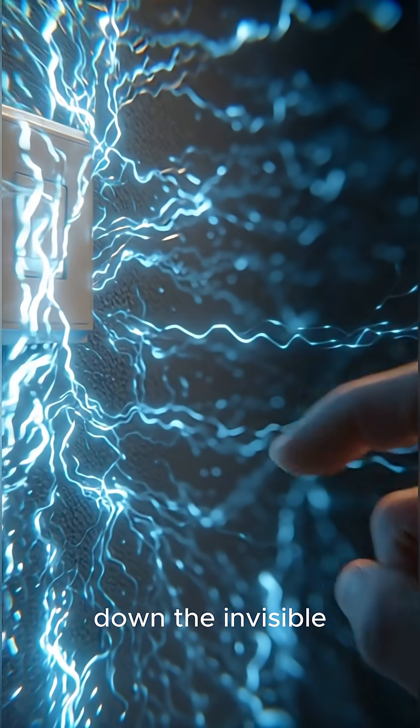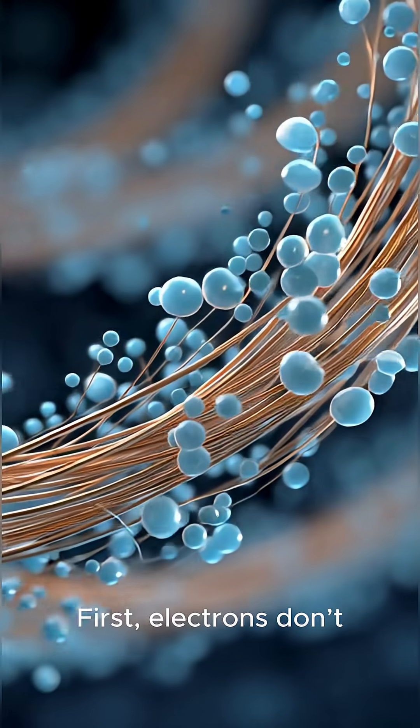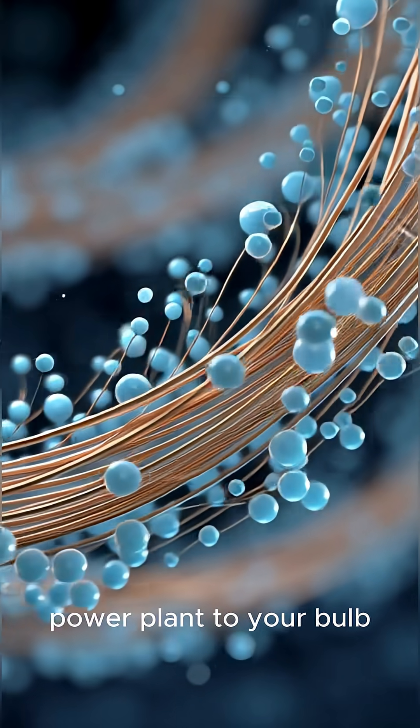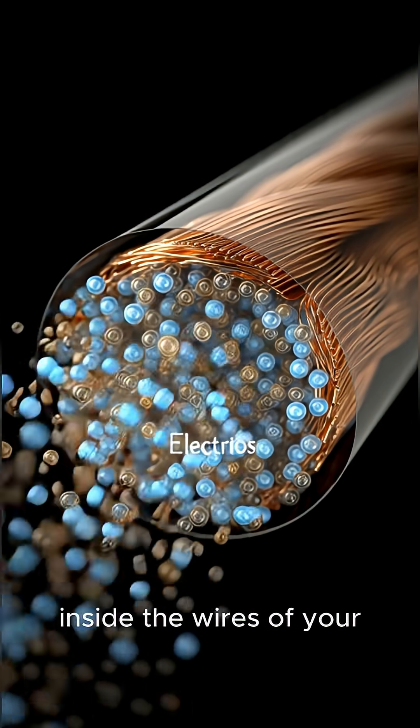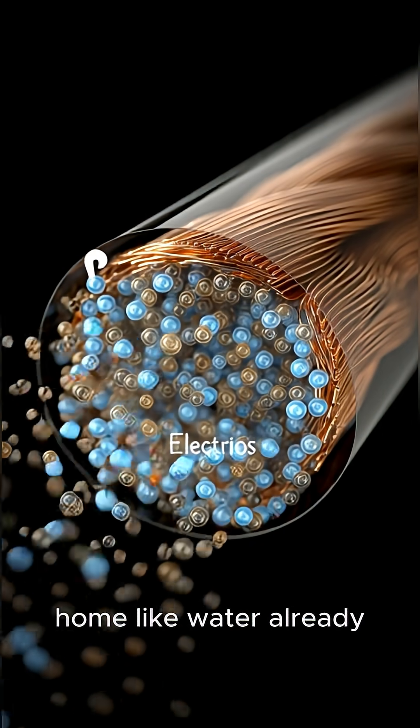Today we're breaking down the invisible world of electrons. First, electrons don't travel from the power plant to your bulb. They're already inside the wires of your home, like water already in a pipe.